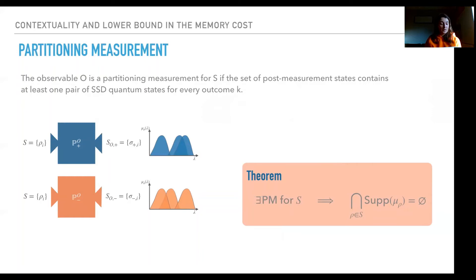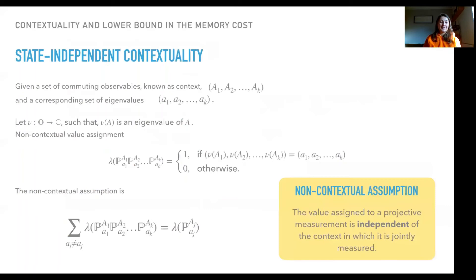Another important concept is a partitioning measurement. An observable O is a partitioning measurement for a set of states S if the set of post-measurement states contains at least one pair of single-shot distinguishable quantum states for every outcome k. A key theorem: if there is a partitioning measurement for set S, this means that the intersection of the supports of the probability distributions of those states is empty.